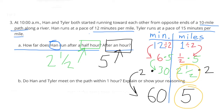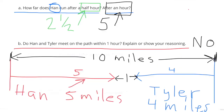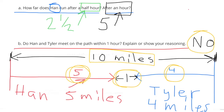Part b: do Han and Tyler meet on the path within one hour? Explain or show your reasoning. After an hour of running, Han completed five miles towards Tyler, and after an hour of running, Tyler completed four miles running towards Han. That brought them one mile away from one another, because five plus four equals nine and it was a ten-mile trail. So the answer is no — after an hour of running they would have been one mile away from one another.